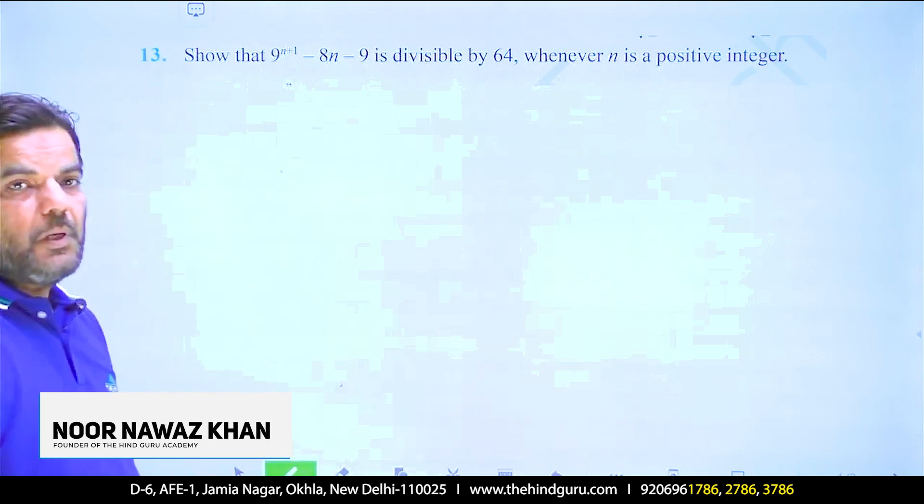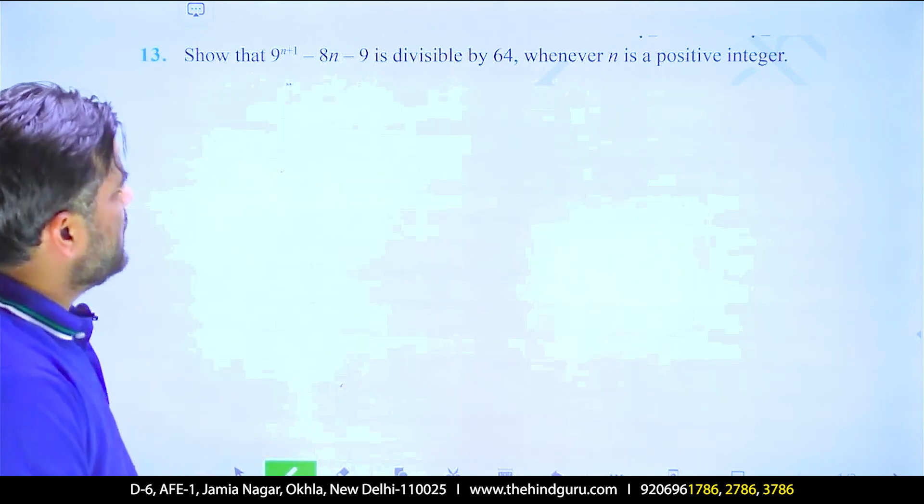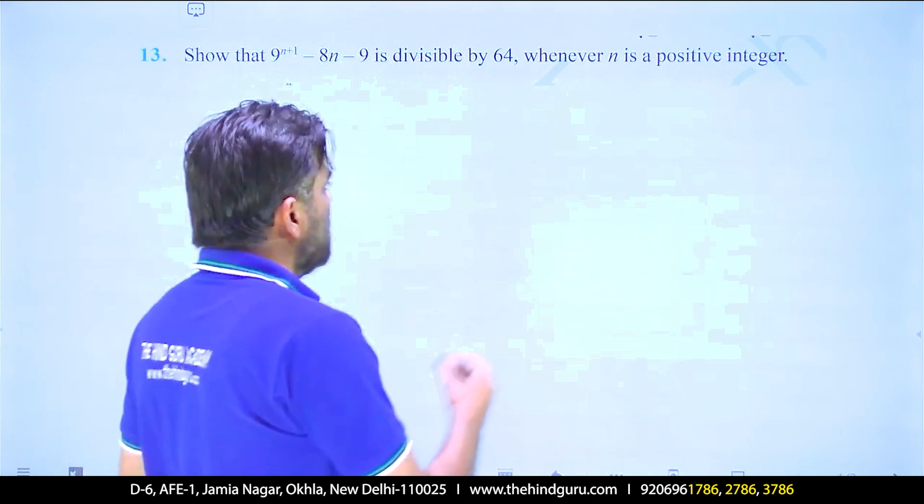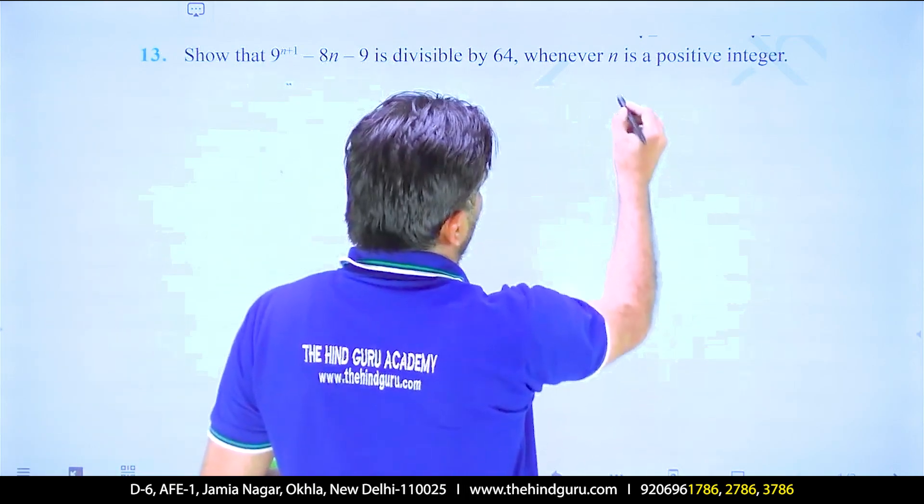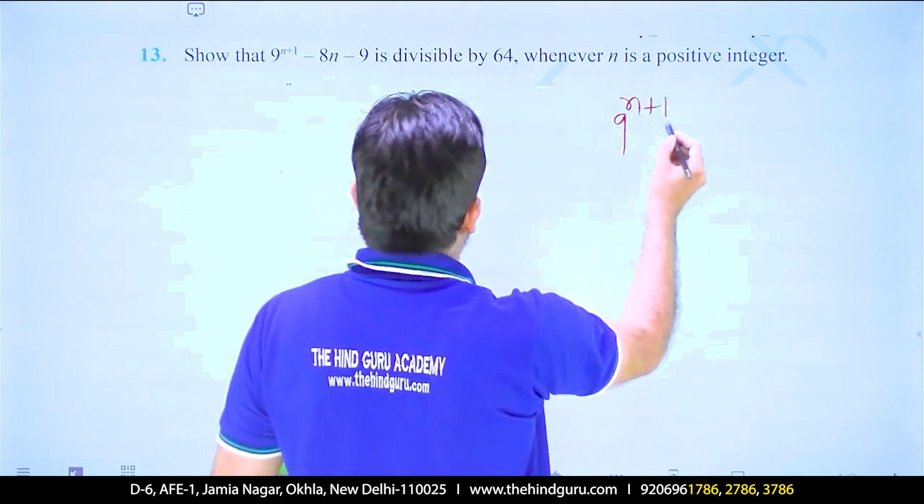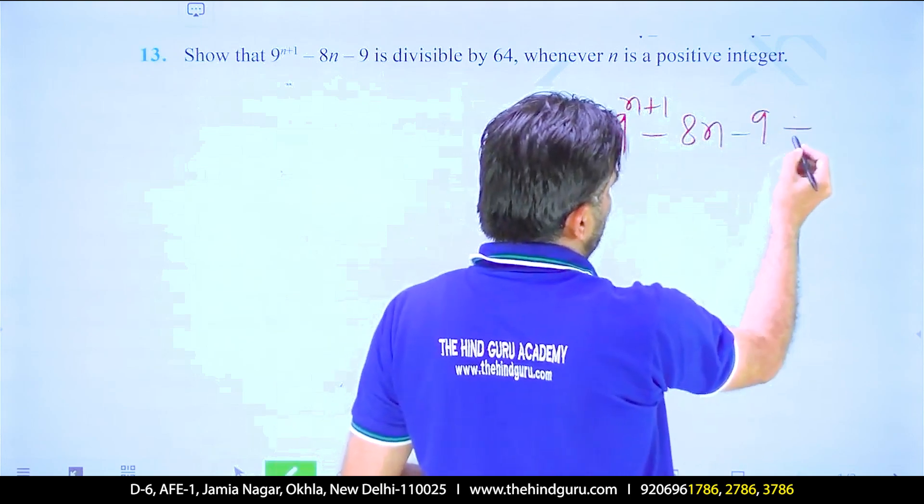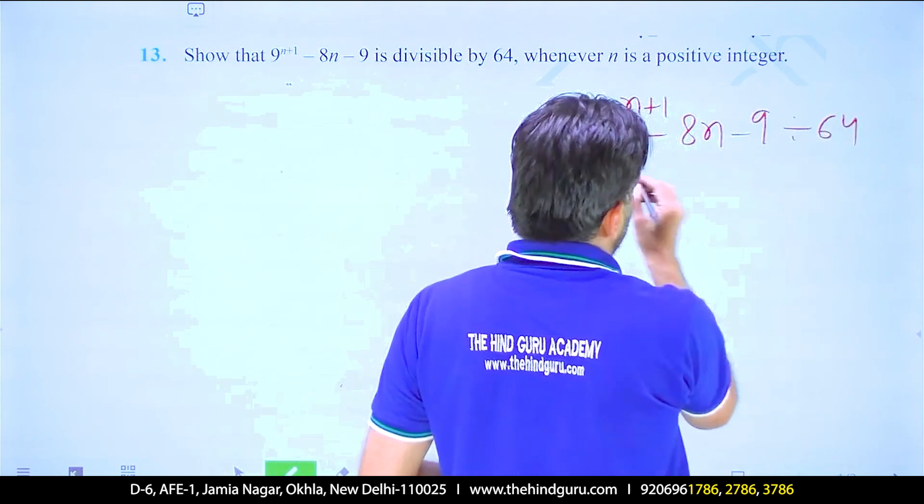Show that 9 to the power n plus 1 minus 8n minus 9 is divisible by 64.